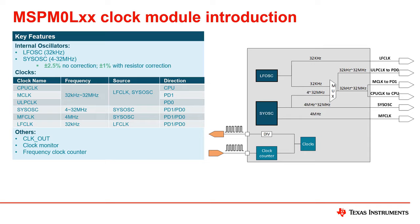Let's take a look at the three main parts of the clock module of the M0L. As you can see in the block diagram, the overall structure is less complex due to the lack of external clock sources. As for internal clock sources, there are two: LFOSC, a 32 kilohertz low frequency oscillator, and SISOSC, a high frequency 4 to 32 megahertz clock source.